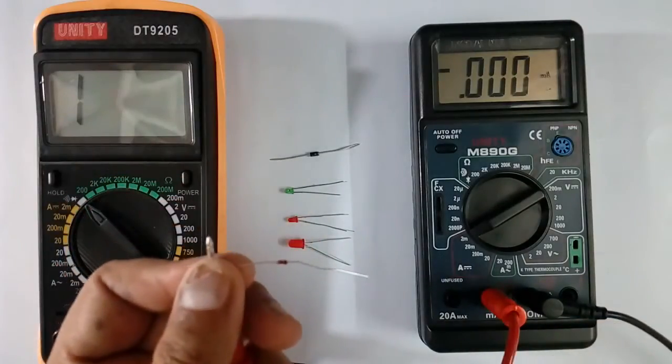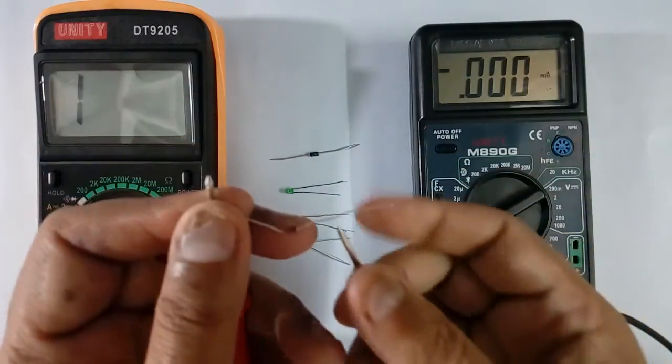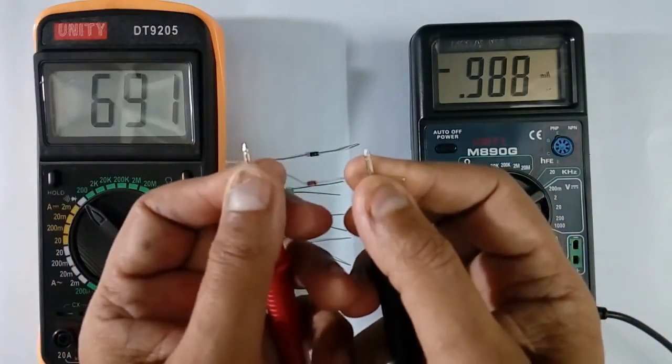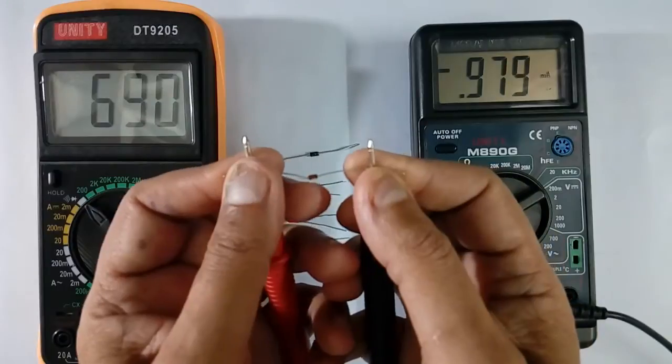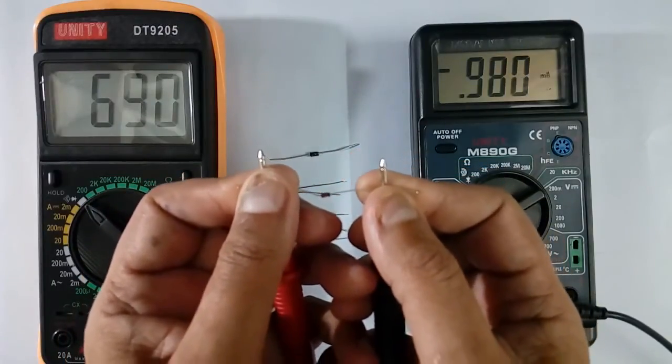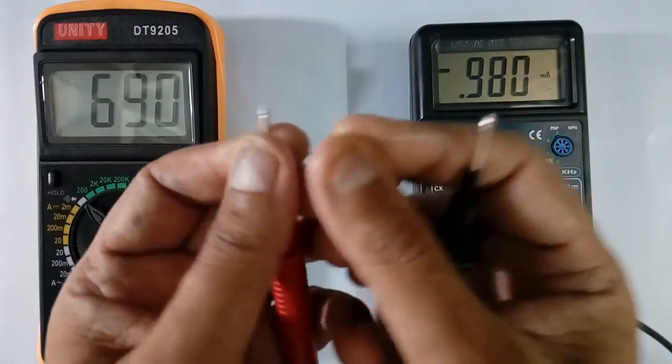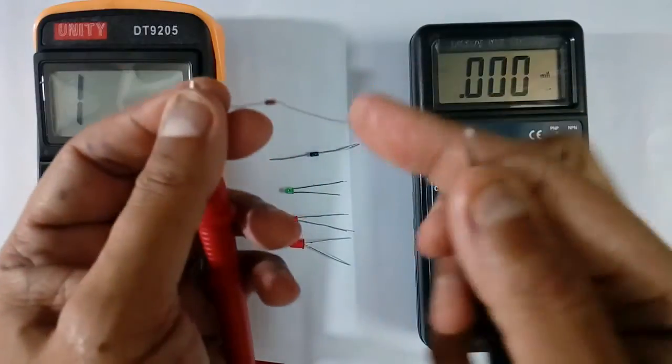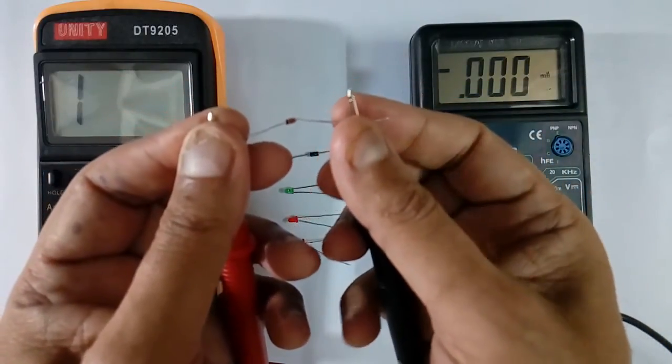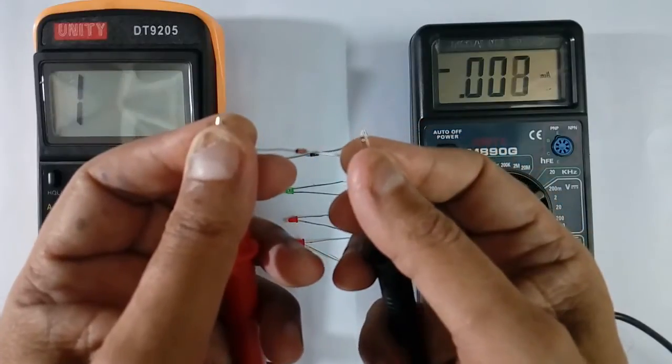I have a signal diode with me, IN4148. We will measure the drop. The diode drop comes. Forward drop. 690 millivolt at current 0.98 mA. If we measure reverse, it will show open. This means the diode is OK.